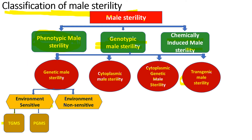Classification of male sterility: male sterility can be classified as phenotypic male sterility, genotypic male sterility, and chemically induced male sterility. Phenotypic male sterility is natural and depends on the environmental condition of the plant, so it is utilized the least in plant breeding programs.